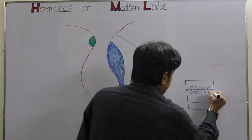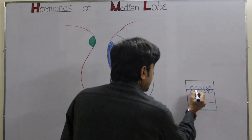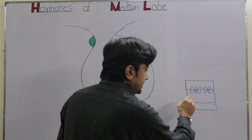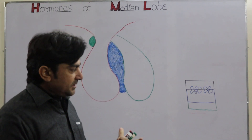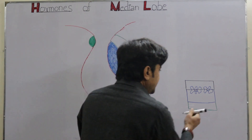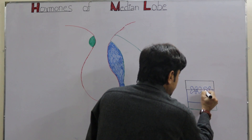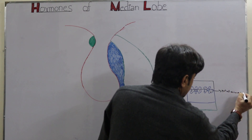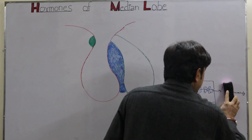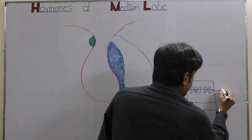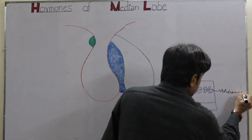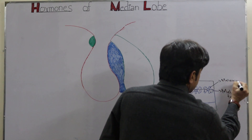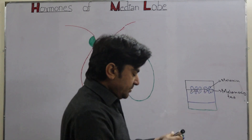These melanocyte cells produce one special protein called melanin. In the nucleus, special genes are present; these genes express and in response they produce a melanin pigment. This melanin pigment is then scattered in the processes of these cells.